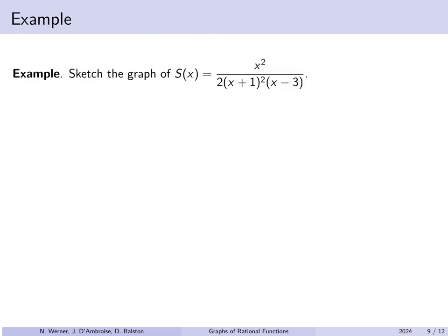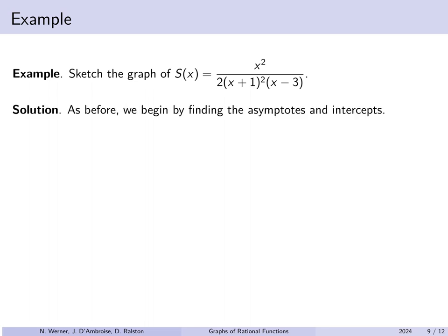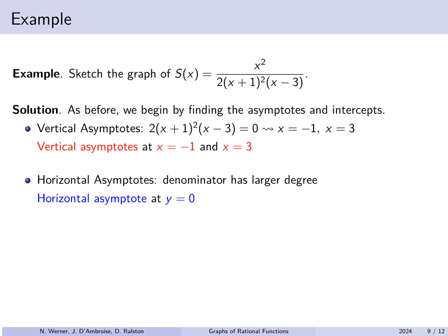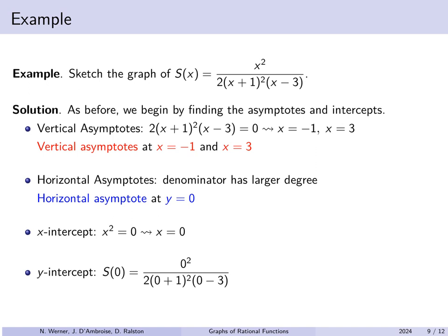Let's sketch the graph of r of x equals x squared over [2(x+1)²(x−3)]. Already in reduced form. Vertical asymptotes: the denominator factors give x equals minus 1 and x equals 3. For horizontal asymptotes, the denominator is degree 3 (x squared times x gives x cubed) while the numerator is degree 2, so the denominator has larger degree and the horizontal asymptote is y equals 0. Setting the numerator to zero gives x-intercept at x equals 0, and plugging in x equals 0 gives a y-intercept of 0 as well — both are the origin.